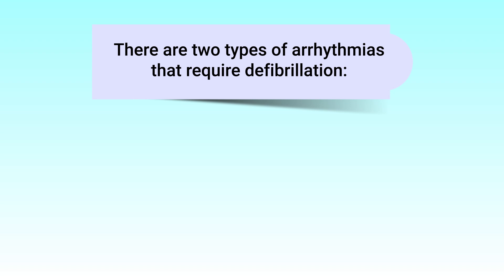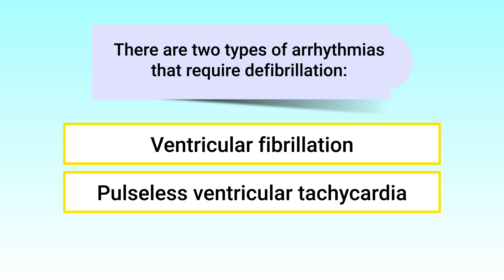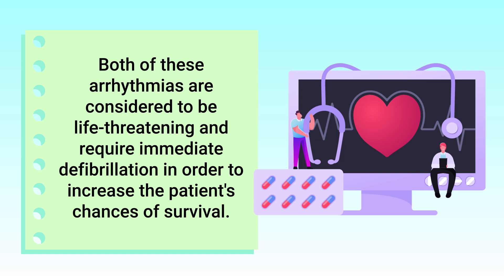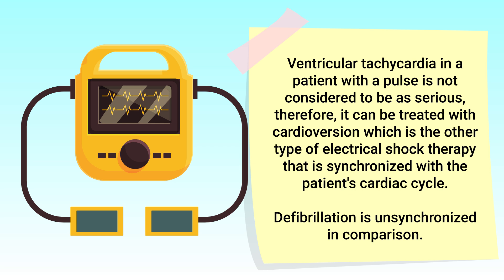There are two types of arrhythmias that require defibrillation: ventricular fibrillation and pulseless ventricular tachycardia. Both of these arrhythmias are considered to be life-threatening and require immediate defibrillation to increase the patient's chances of survival. Ventricular tachycardia in a patient with a pulse is not considered to be as serious, and can be treated with cardioversion, which is synchronized with the patient's cardiac cycle. Remember, defibrillation is unsynchronized.